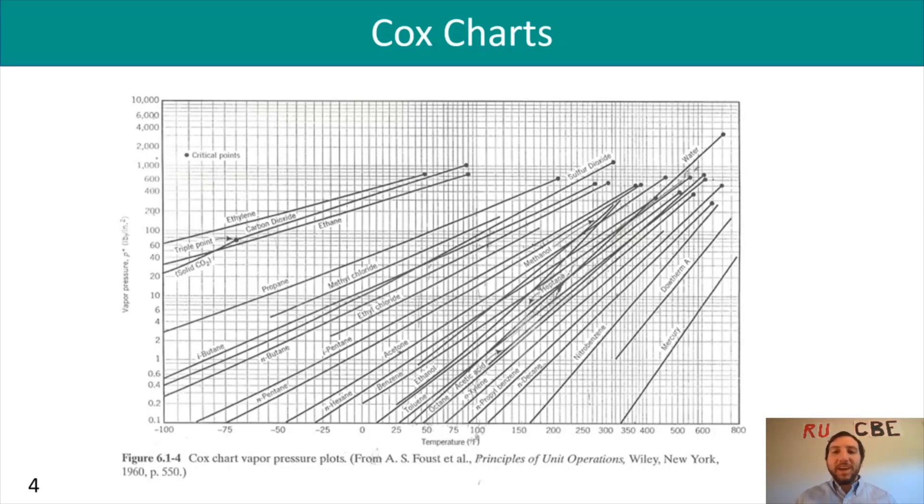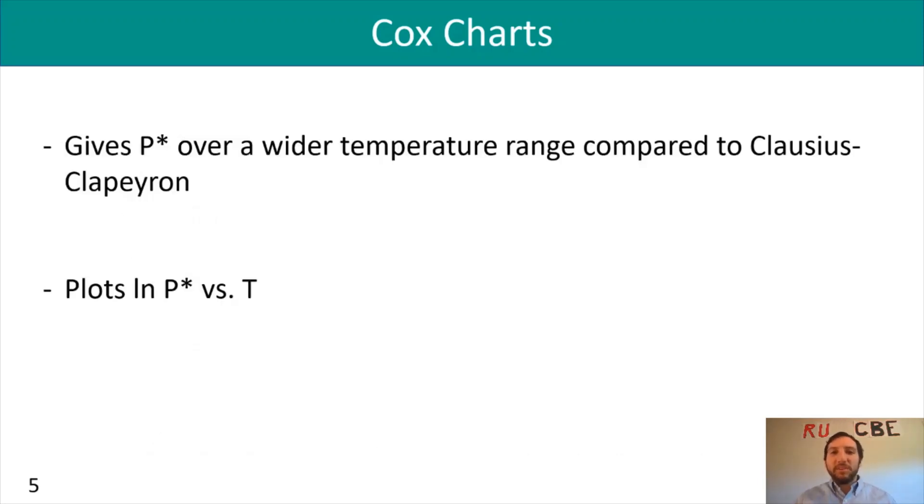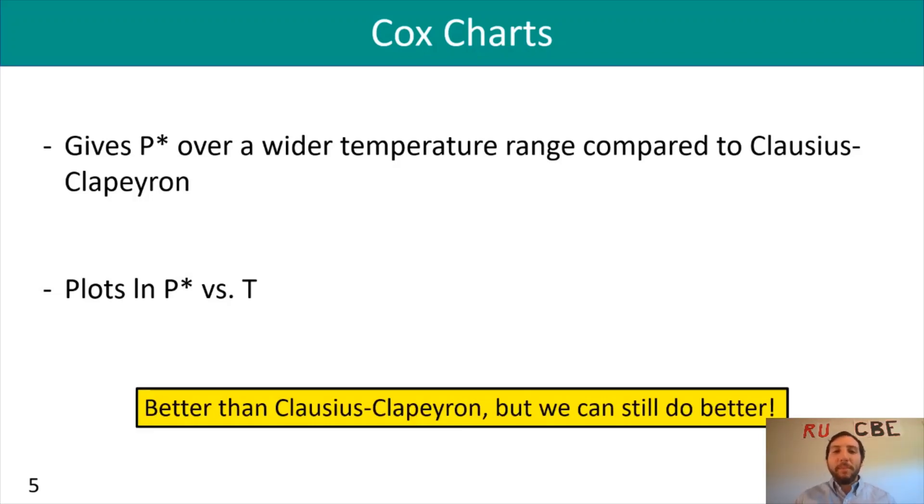With the Cox chart, it is good. It gives you P* over a wider range of temperatures compared to Clausius-Clapeyron, plotting ln P* versus T. This would be better to use compared to Clausius-Clapeyron, but there's another method that's actually still better than the Cox chart, because I'm sure you don't want to squint your eyes to find these values.